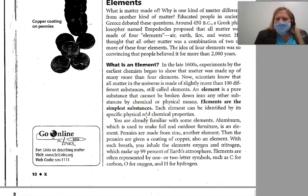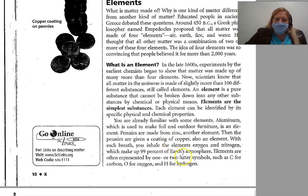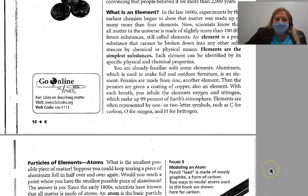What is an element? In the late 1600s, experiments by the earliest chemists began to show that matter was made up of many more than four elements. Now scientists know that all matter in the universe is made up of slightly more than a hundred different substances, still called elements. An element is a pure substance that cannot be broken down into any other substance by chemical or physical means. Each element can be defined by its specific physical and chemical properties. You are already familiar with some elements — aluminum is used to make foil and outdoor furniture. Pennies are made from zinc, then given a coating of copper. When you breathe, you inhale the elements oxygen and nitrogen, which make up 99% of Earth's atmosphere. Elements are often represented by one or two letter symbols, such as C for carbon, O for oxygen, and H for hydrogen.